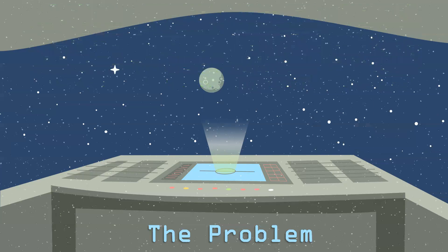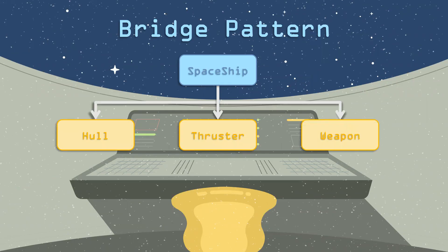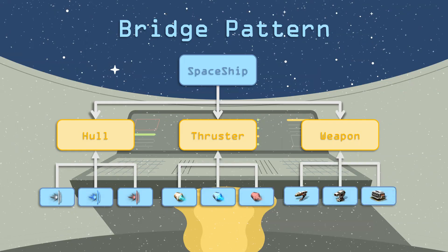So, to mitigate this, I decided to use the bridge pattern. With the bridge pattern, you start with your basic class, which would be the spaceship. And the spaceship contains references to three objects: a hull, a thruster, and a weapon. But we implement those using abstract classes — the hull, thruster, and weapon are abstract classes. And we have all of our actual concrete classes extend from those. This is really great because it allows us to expand upon this if we need to in the future. For example, if we need to add a fourth type of hull, we can just have it extend the hull abstract class. It's very simple to use, same for the thrusters and the weapon.